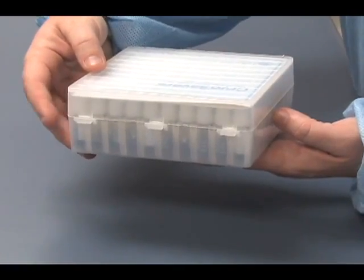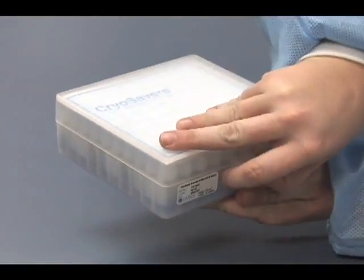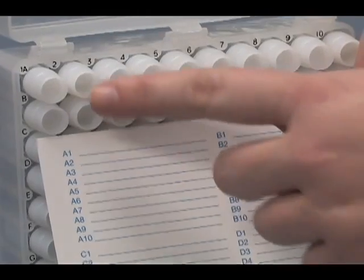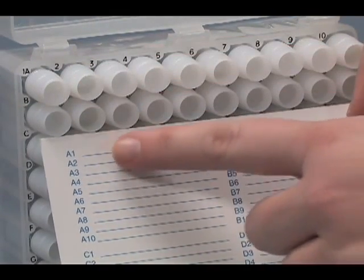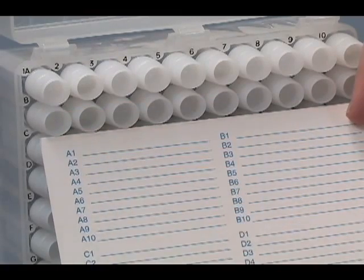The 100 size box features a hinged lid and numbered and lettered sides for easy identification of each vial. Included with the box is a waterproof card for recording the contents of each vial.